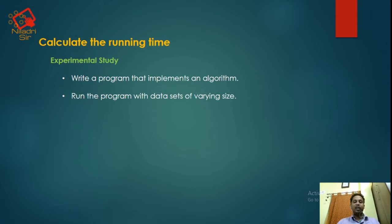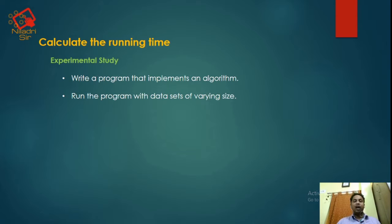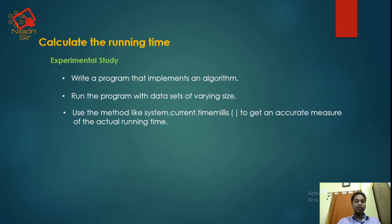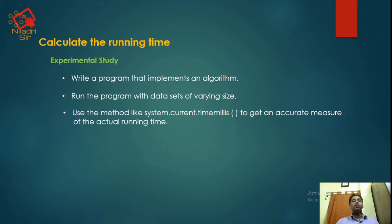Next, we will run that program with data sets of varying size. We will take different types of inputs — first a small limited number of inputs, check the outputs, then take another set of inputs and calculate the output again. The input size may be small, medium, or large. We will use methods like system.currentTimeMillis to get an accurate measure of the actual running time, using inbuilt methods available in many programming languages.